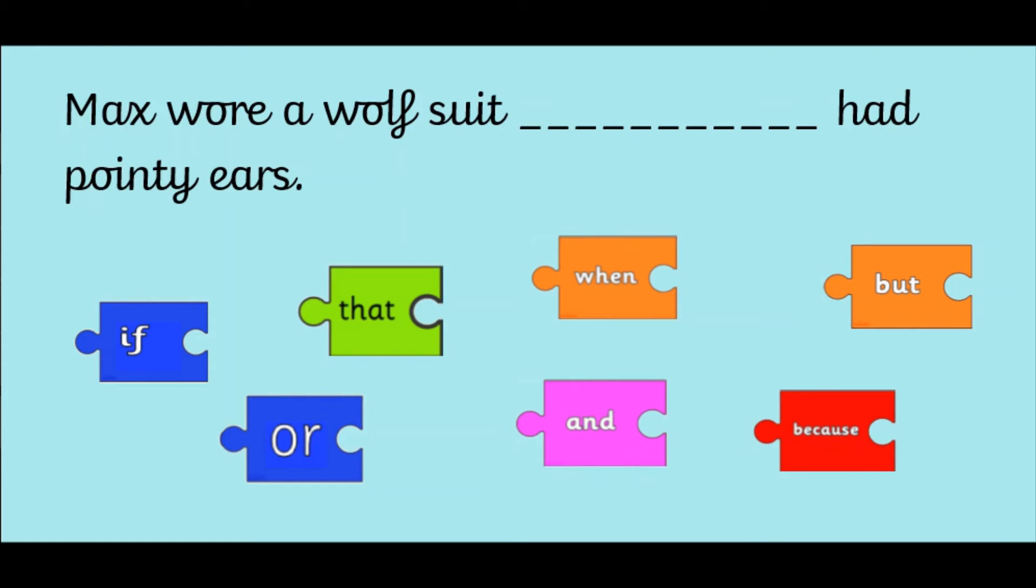Welcome back! The conjunction that goes in this gap is that. Max wore a wolf suit that had pointy ears. That is when we're adding some extra information about something. So here we're adding some extra information about the wolf suit. And we are saying that it has pointy ears. Well done if you got that one right.